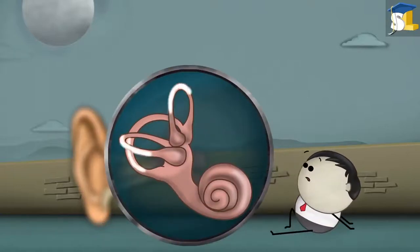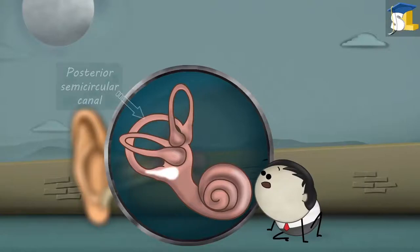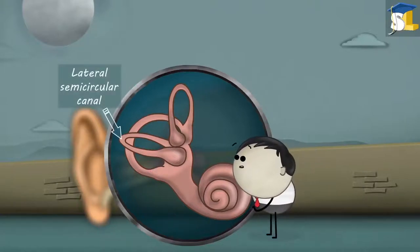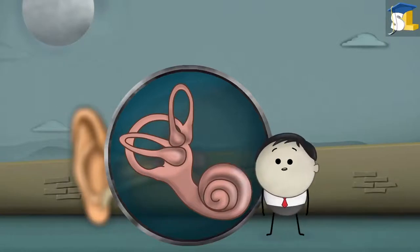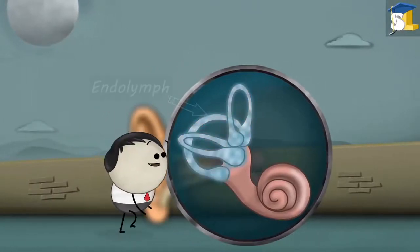The inner ear consists of three semicircular canals called superior semicircular canal, posterior semicircular canal, and lateral semicircular canal. The three semicircular canals are arranged in three different positions. Each of these canals has a fluid called endolymph.